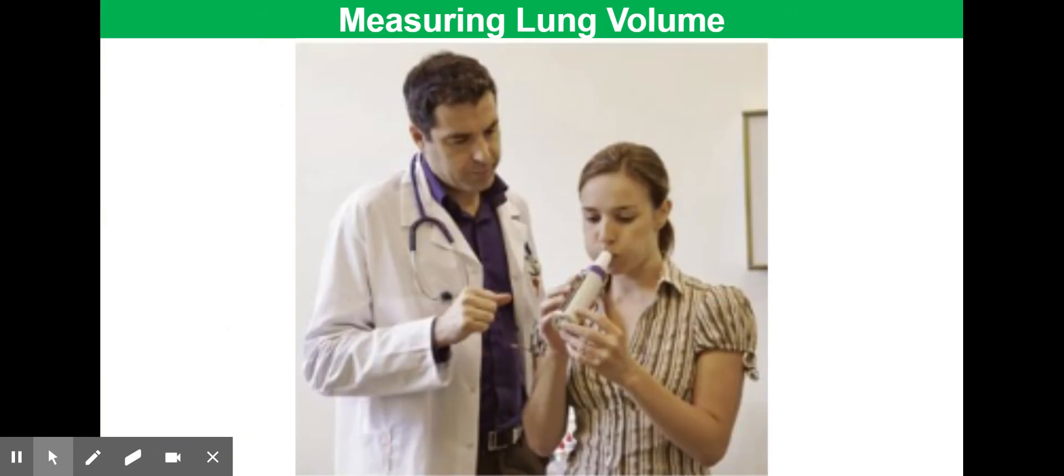Modern spirometers can be significantly smaller than the one on the previous slide. This one here that you're looking at now is just a simple handheld device and it can be used to record the movement of air in and out of the lungs. The only disadvantage here is that you can't measure the rate of oxygen consumption.